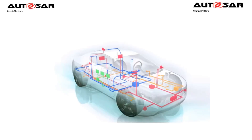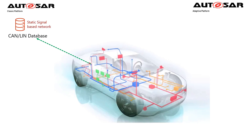Let's start with AUTOSAR Classic. AUTOSAR Classic has been around for many years and it's still doing well until recently. With AUTOSAR Classic, the vehicle network is mostly based on CAN and LIN, where every signal and message is fixed at configuration time. Basically, all information exchanged in the vehicle network is well defined and must be defined in a CAN database or similar format.